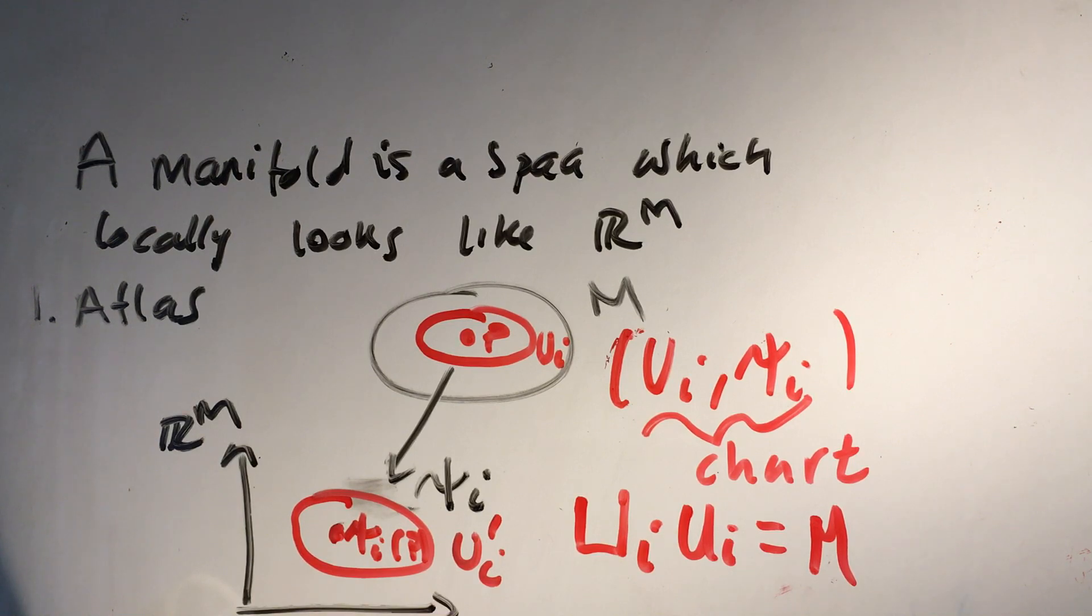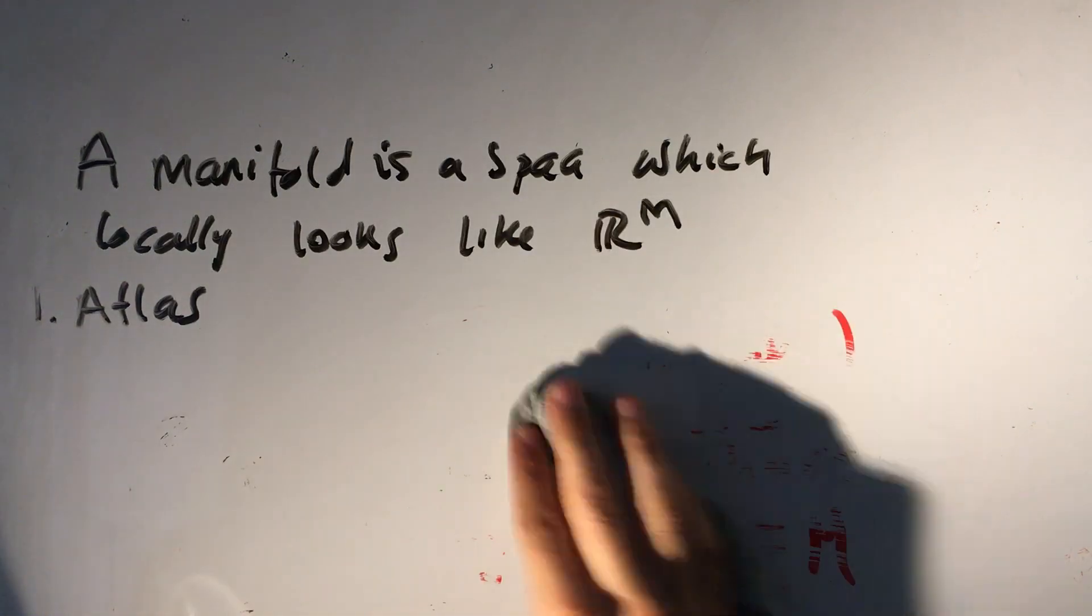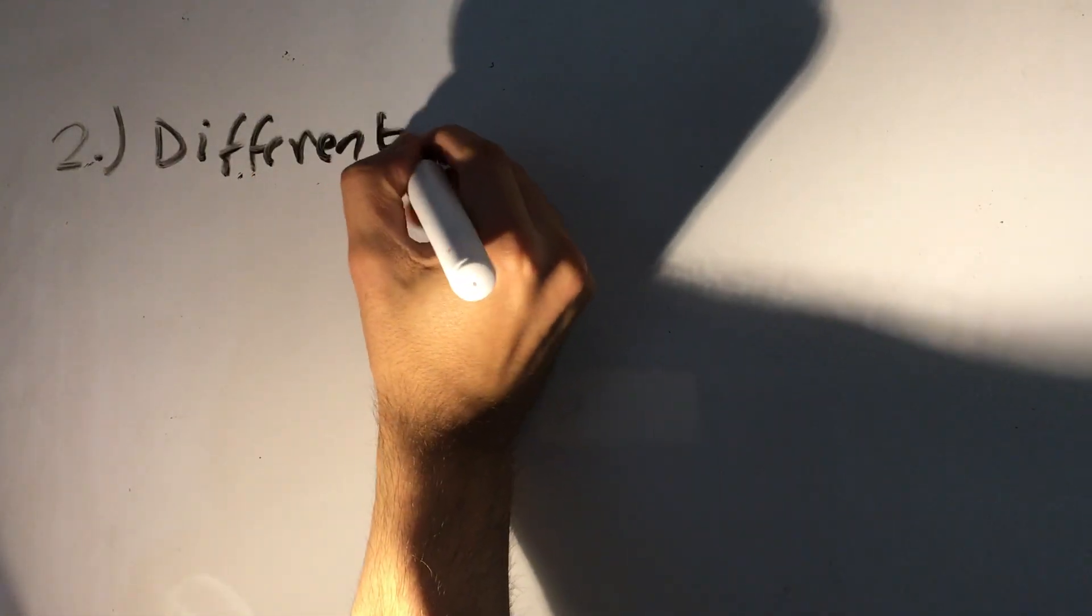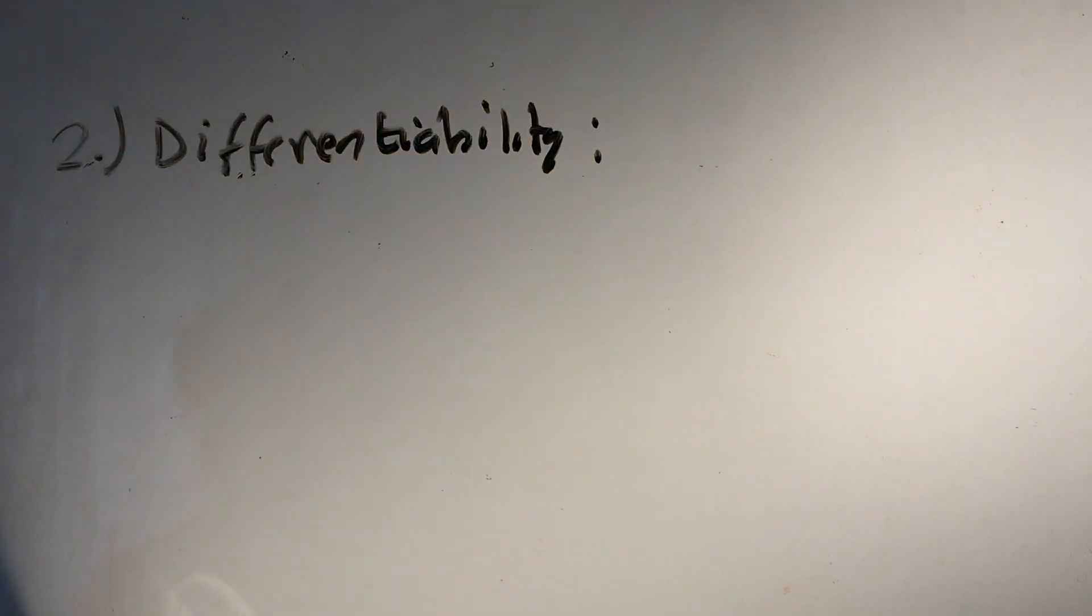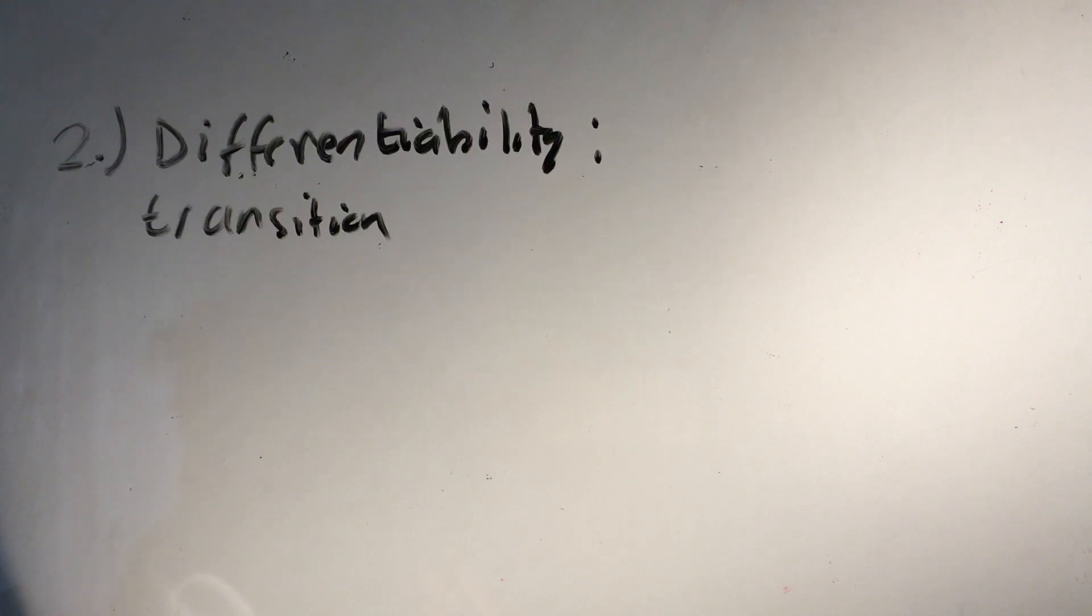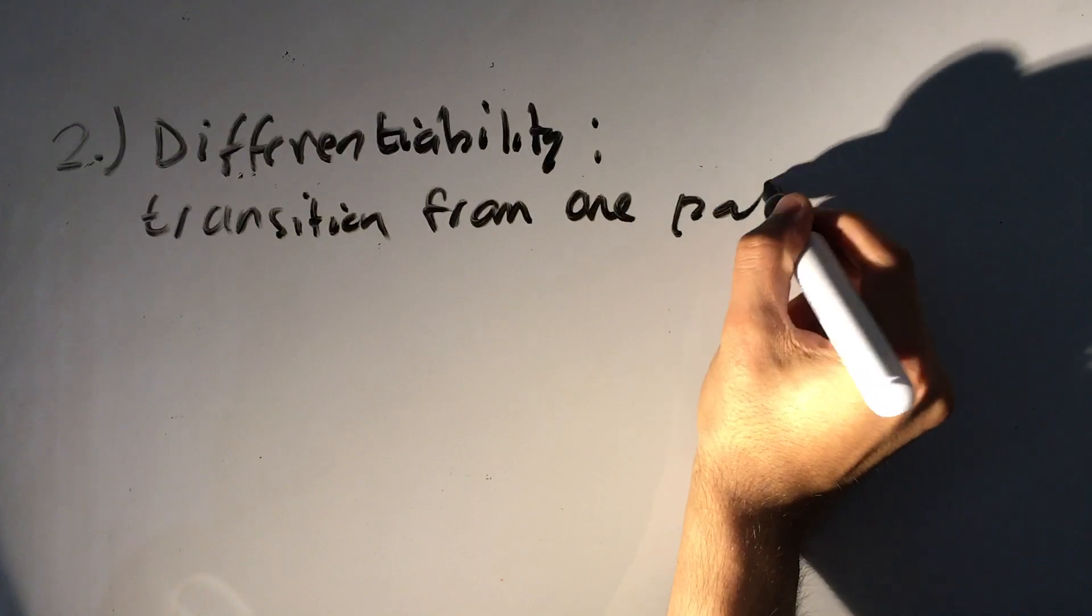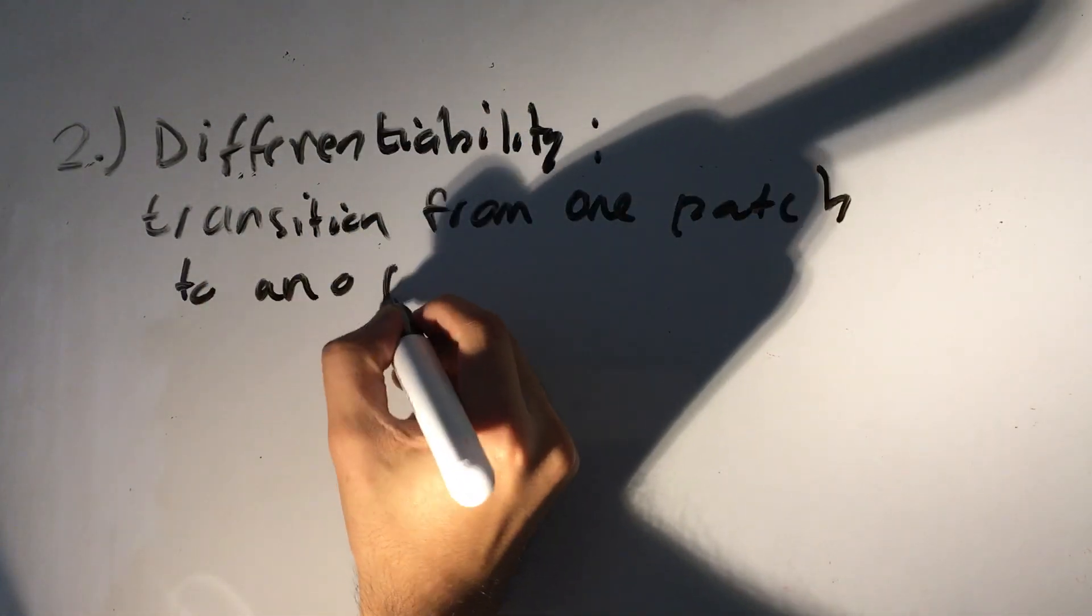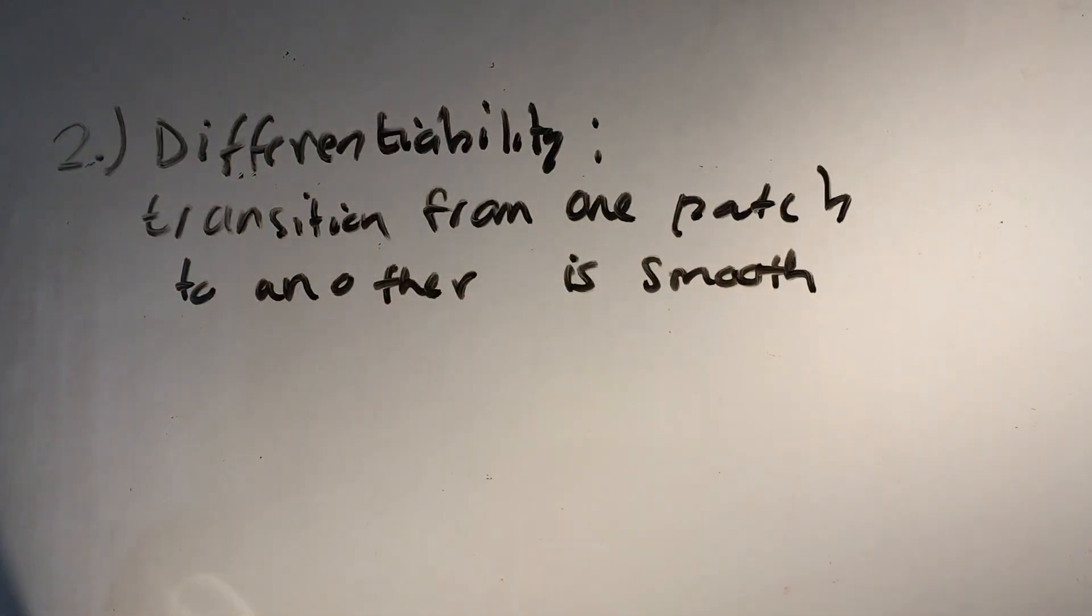The second important thing to define what a manifold is, it's kind of harder for me to explain. So the second thing is differentiability. So what we mean by differentiability is the transition from one patch to another is smooth.